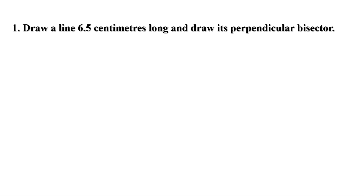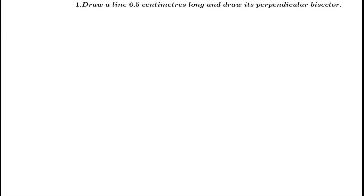First problem: draw a line 6.5 cm long and draw its perpendicular bisector. First, let us draw a line of length 6.5 cm. To draw the perpendicular bisector, put the compass at one end, take more than half of the length as radius, and draw arcs on both sides of this line, like this.